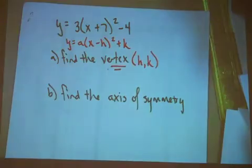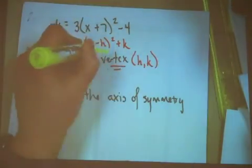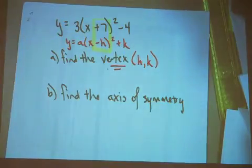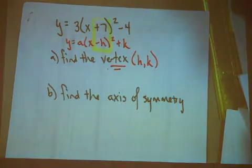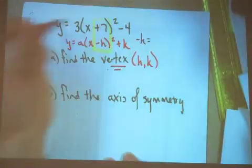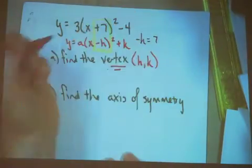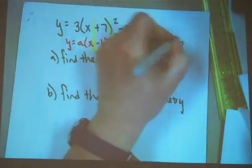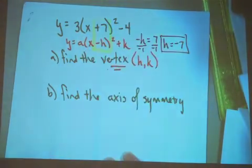Now, on this particular set, notice that it's x plus 7 quantity squared. What we need to do is remember that it's supposed to be a minus h. So we can create a small equation that says the negative h should equal 7, so divide both sides by negative 1. And apparently, the h coordinate is really a negative 7.